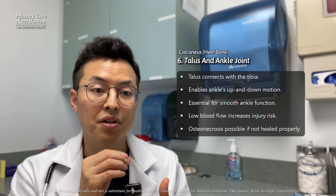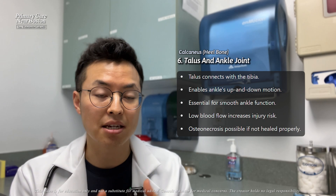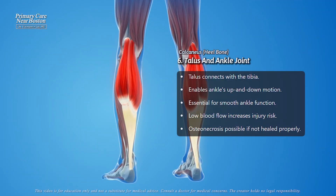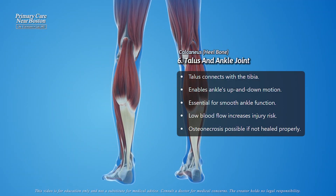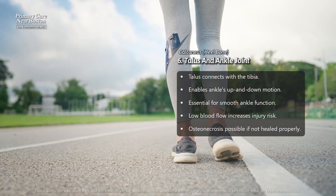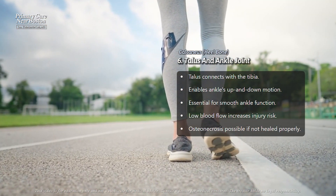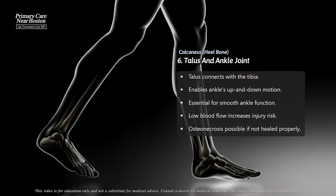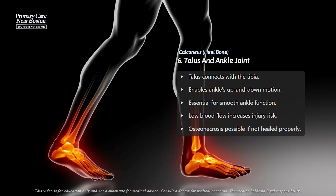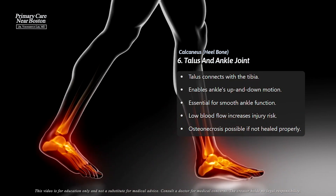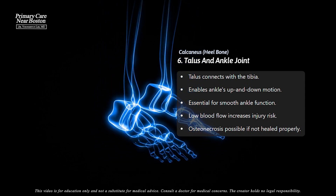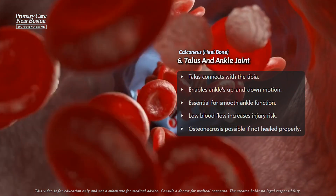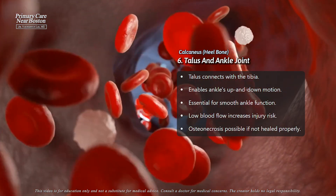The talus sits above the calcaneus and is key in forming the ankle joint. It connects the foot to the leg and helps with the up and down motion of the ankle. The talus has several joints, including the one with the tibia, which allows the ankle to move smoothly. This bone doesn't have a lot of blood flow, so if it gets injured, such as in an ankle sprain, it can sometimes lead to more serious issues like osteonecrosis, where part of the bone doesn't heal properly due to lack of blood.